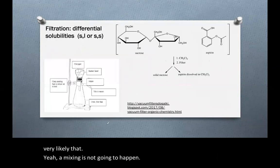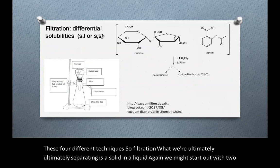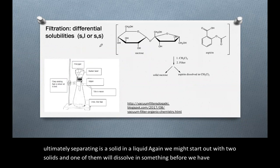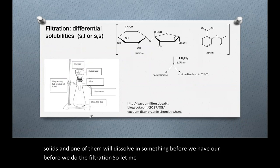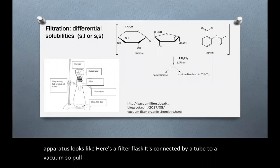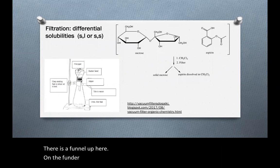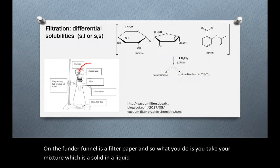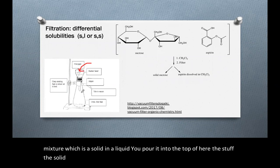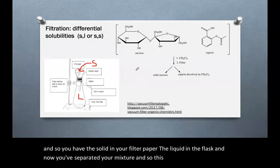Let's look at filtration. What we're ultimately separating is a solid and a liquid. Here's the apparatus: a filter flask connected by a tube to a vacuum. There's a funnel with a filter paper on top. You take your mixture — a solid and a liquid — and pour it into the top. The solid is caught in the filter paper; the liquid goes through into the flask. You have the solid in your filter paper and the liquid in the flask — you've separated your mixture.